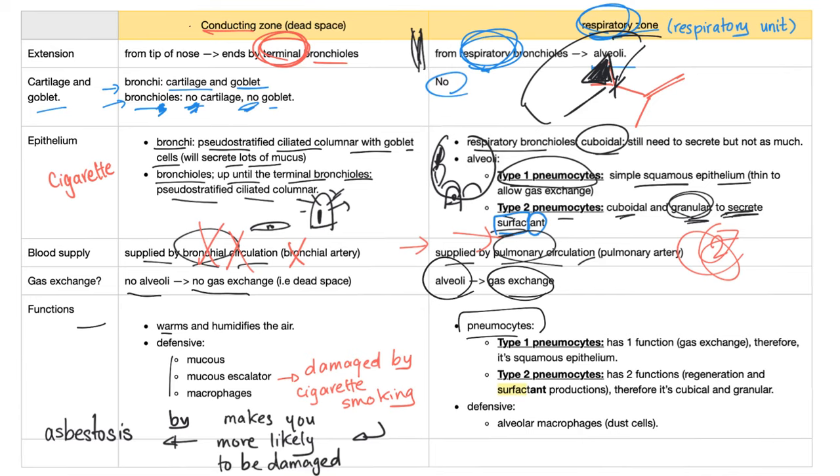Pneumocytes. We have type 1 pneumocytes and type 2 pneumocytes. Type 1 has one function, which is gas exchange. Therefore, the shape is squamous because we would like to give all of the space to gas exchange. We do not like to obstruct the space or the interface. Type 2 pneumocytes has two functions. Regeneration, it's a stem cell, and surfactant production, which is an anti-surface tension. That's why it's cuboidal. It's not columnar because we need the space. It's not squamous because squamous don't secrete anything. Those are the secretory granules because it's going to secrete the surfactant.